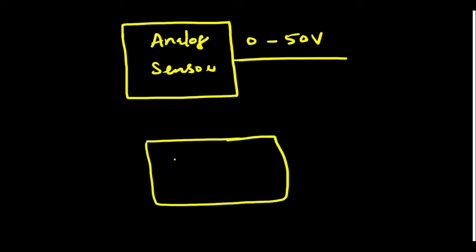We have an analog sensor that gives out 0 to 5V, and we have a microcontroller. The analog input can take 0 to 3.3V. So, what we need?